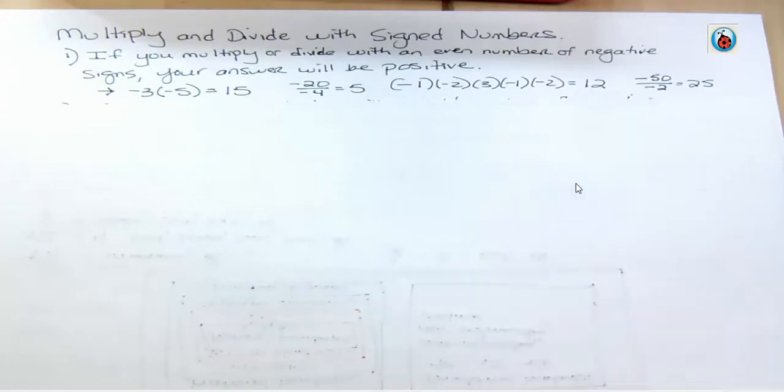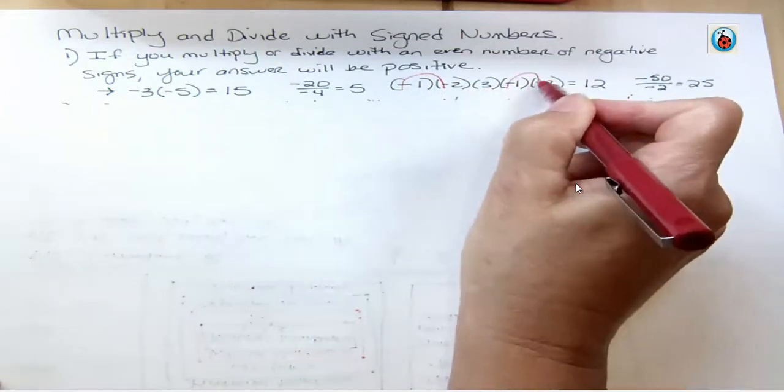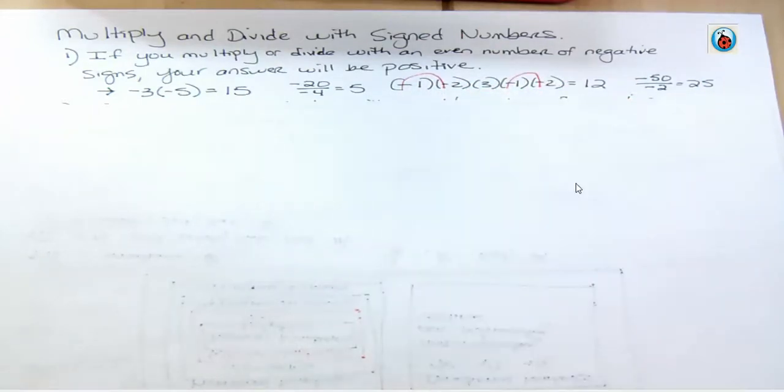Because essentially what happens is when you have 2 negative signs, they sort of cancel each other out. And then 2 more cancel each other out. And there's no negative signs left over. If I had an odd number, I'd have a different situation.